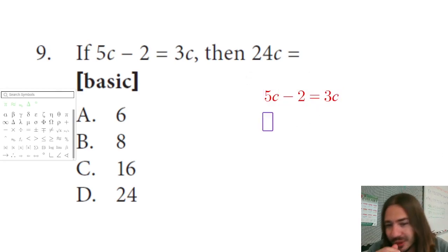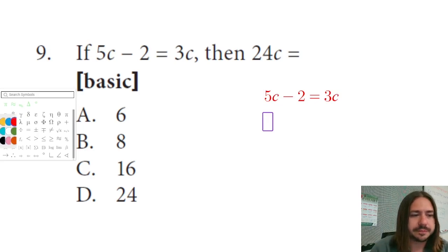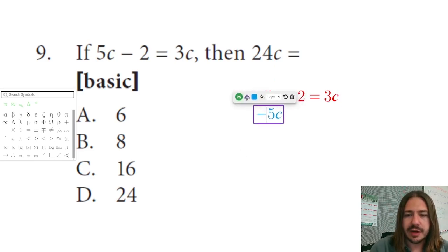Okay, so we're going to subtract 5c from both sides here. Let's do my work here. Minus 5c on both sides. I'm trying to isolate c.